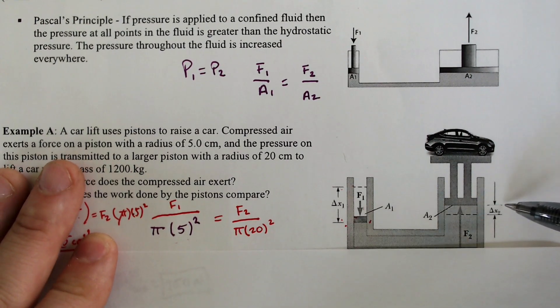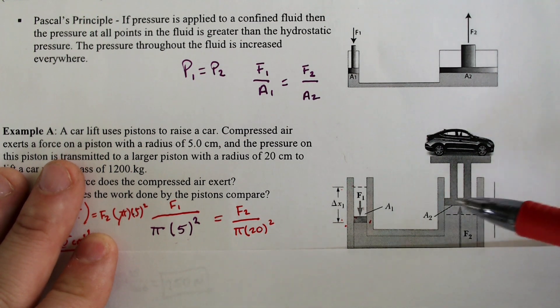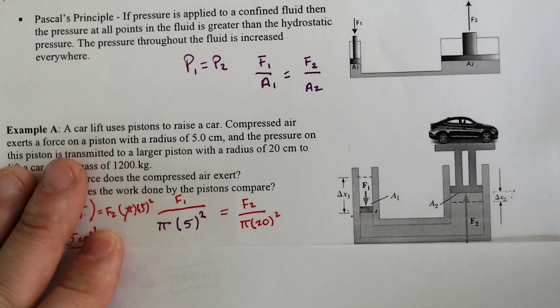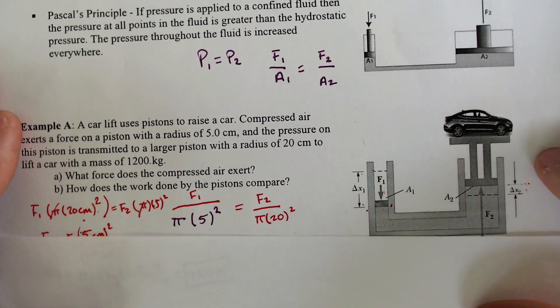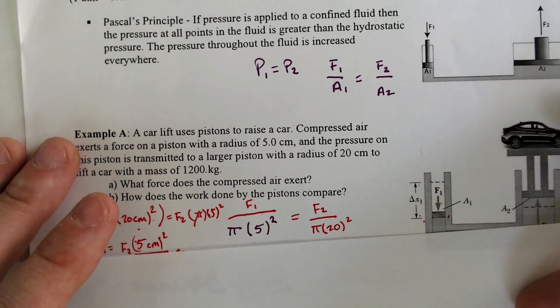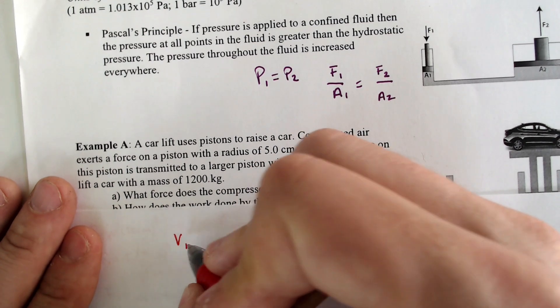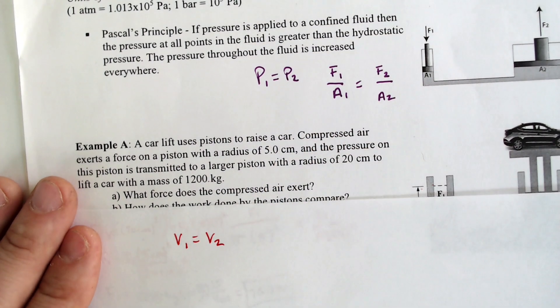And over here we have this shorter vertical height times the area would also equal volume. And we know the volumes have to be the same, so we should probably relate something involving this to volume. So the volume of both of these is going to be the same.